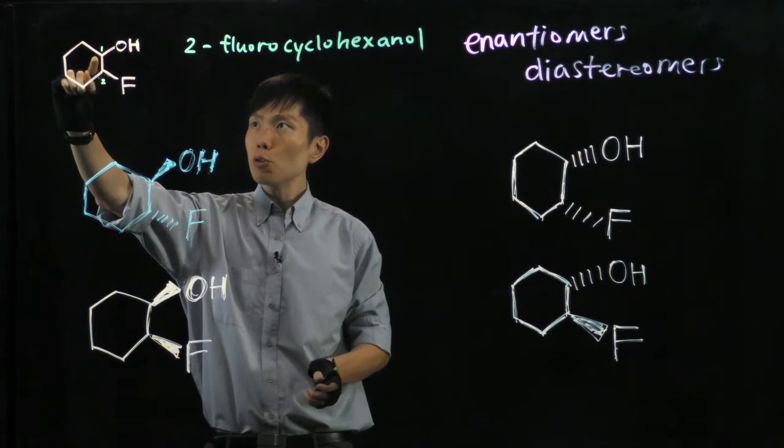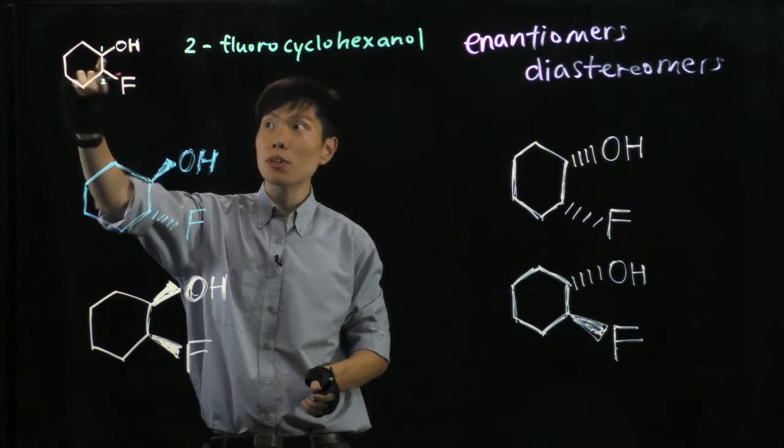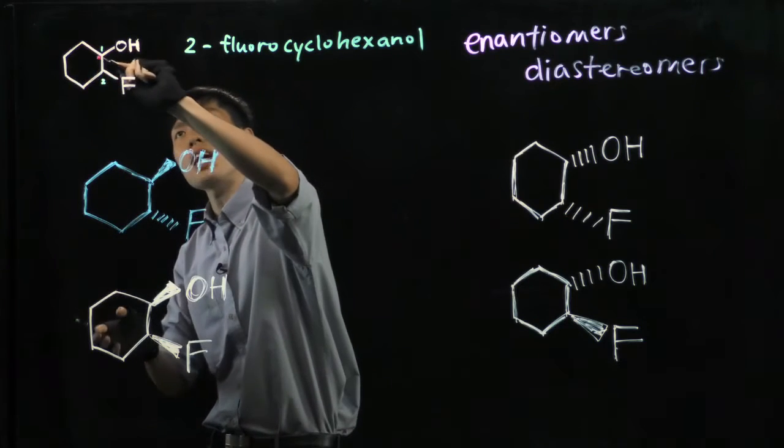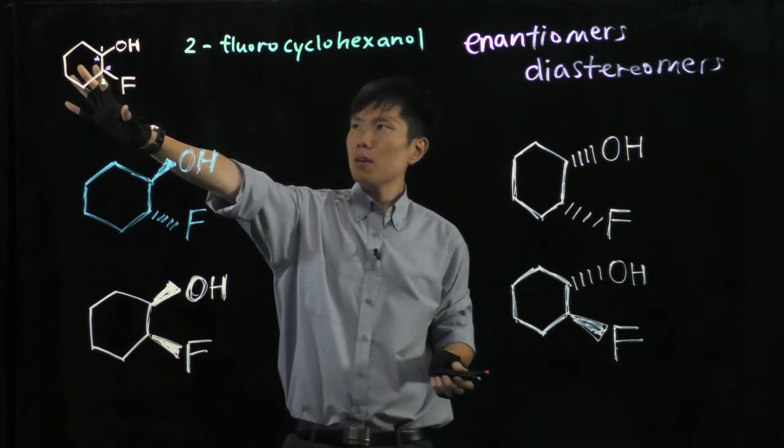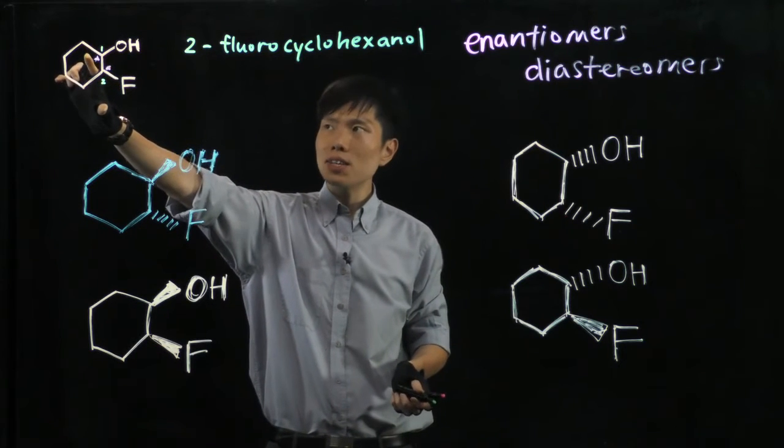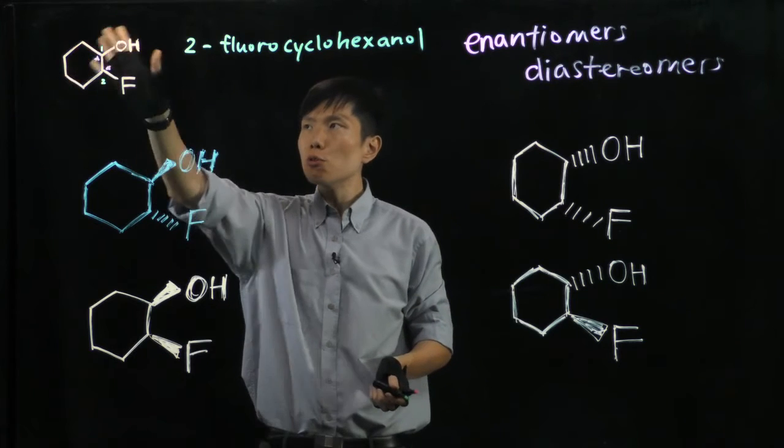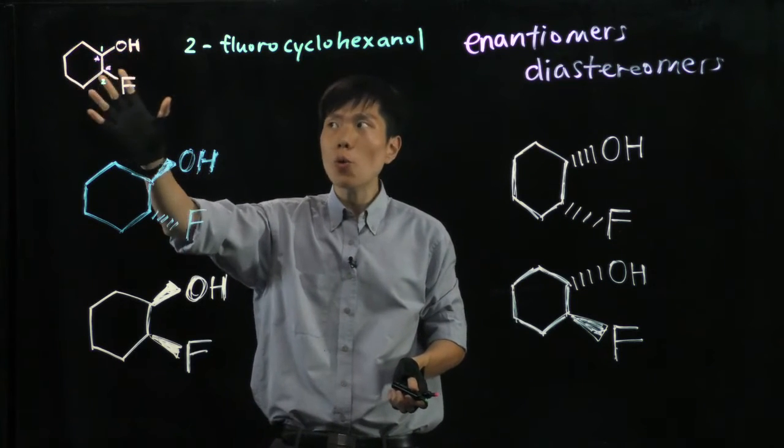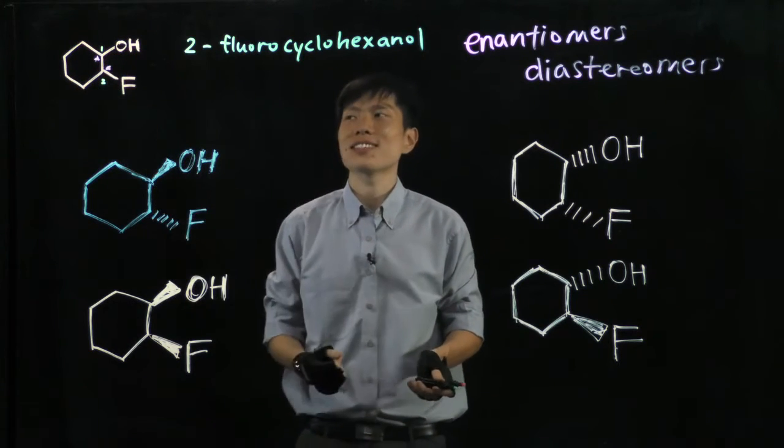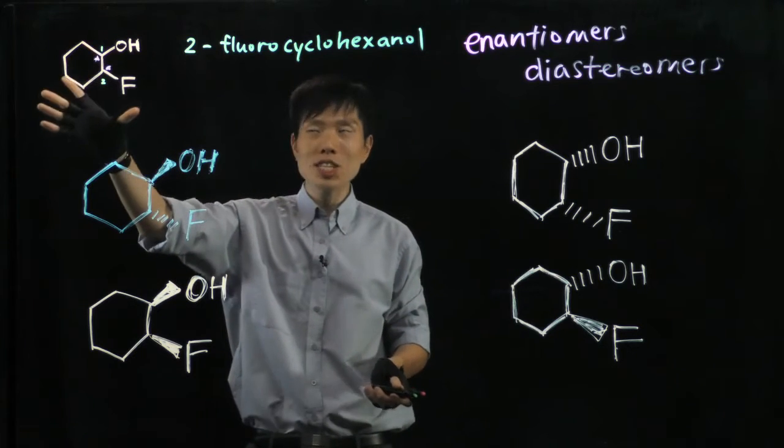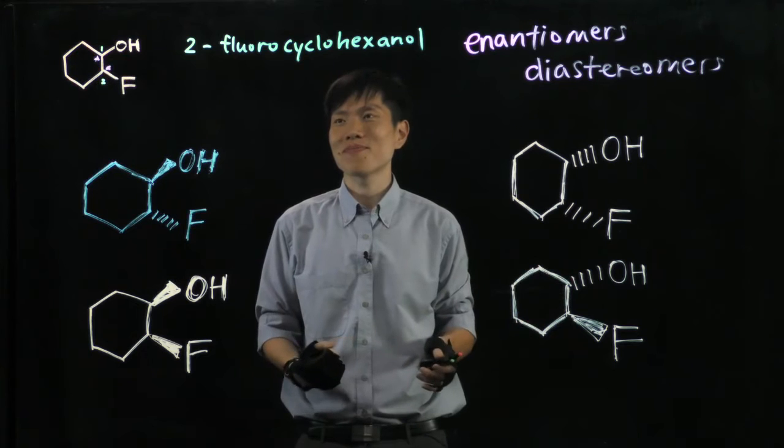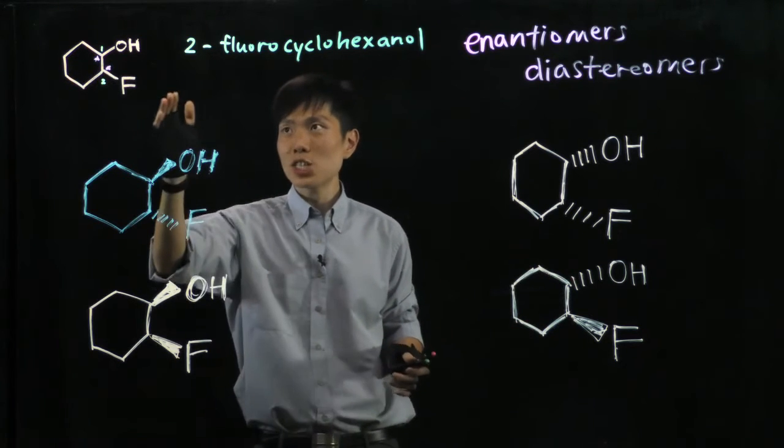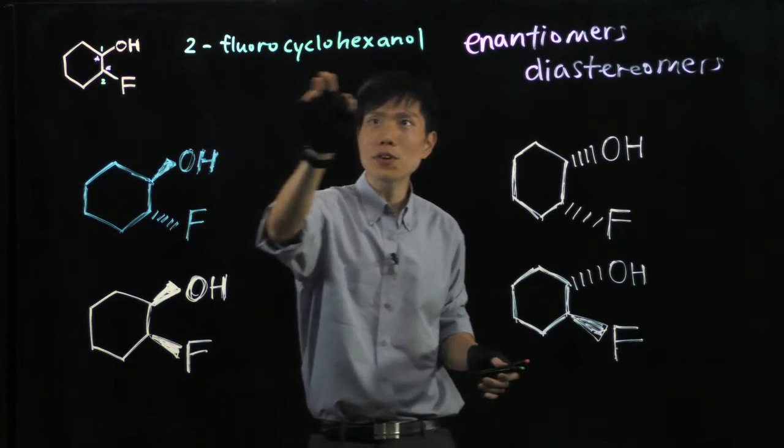Now in this case, we also notice that there are two chiral centers here I'm pointing to. Let me just put a star for you. But here we cannot tell whether it is an R or S configuration, because there's no 3D bonds being shown to you, there's no wedges, there's no hash lines. Which means if I give you this molecule, you cannot decide whether it's R or S. You can just provide me with the name 2-fluorocyclohexanol.